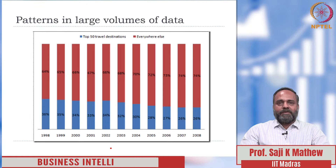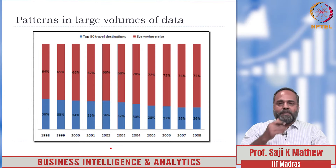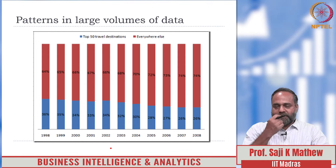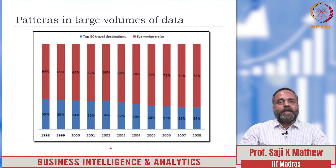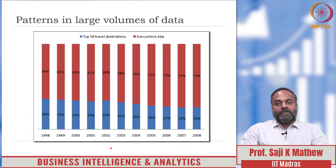We come to the next slide, which shows air travel volumes analyzed by an analyst some time back. This analyst collected data about air travel volumes between 1998 and 2008. Since both years are included, this is 11 years of air travel volume data. The x-axis shows the years and the y-axis shows the volume of travel, not in absolute numbers but in relative percentages.